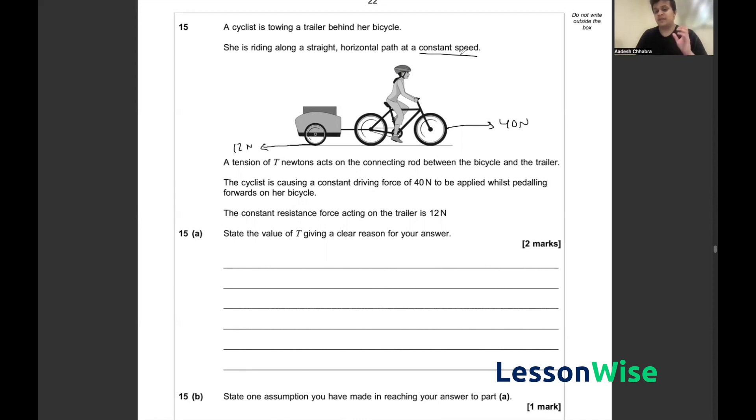One important piece of information is the fact that both the trailer and the biker are moving at constant speed. Since the trailer is not accelerating, that means that the forces around the trailer are balanced or they're in equilibrium, which means that the tension force, which acts in this direction with respect to the trailer, would be equal to 12 newtons as well.